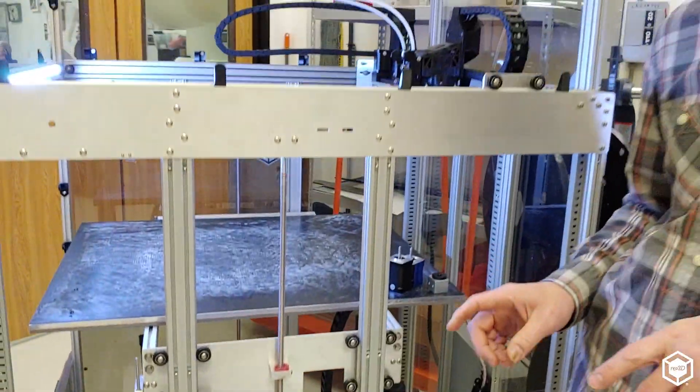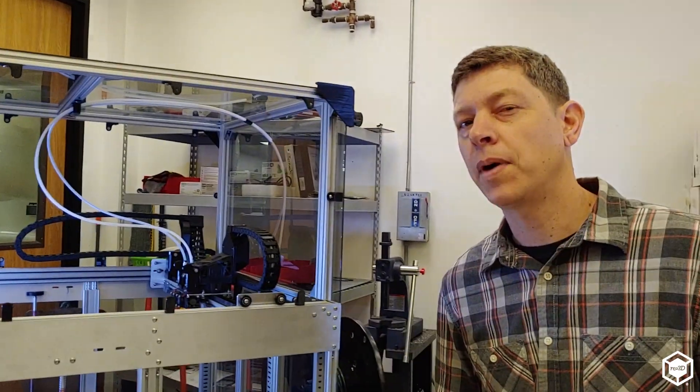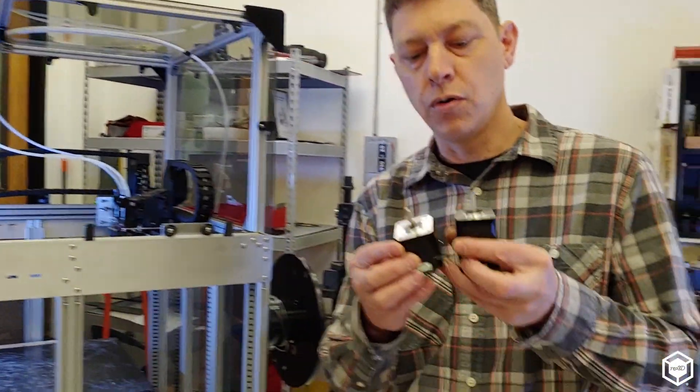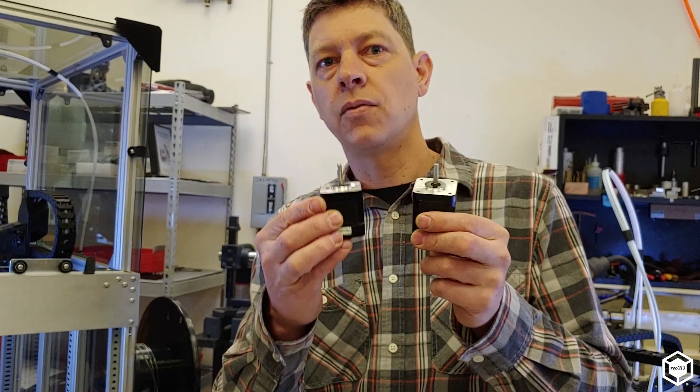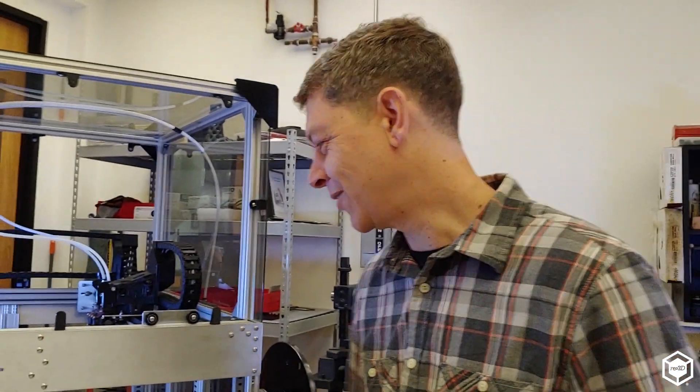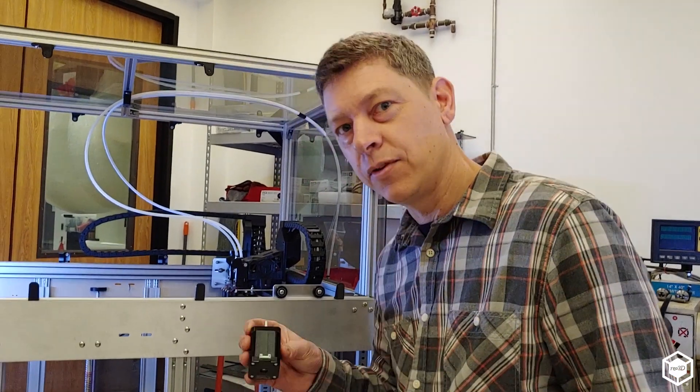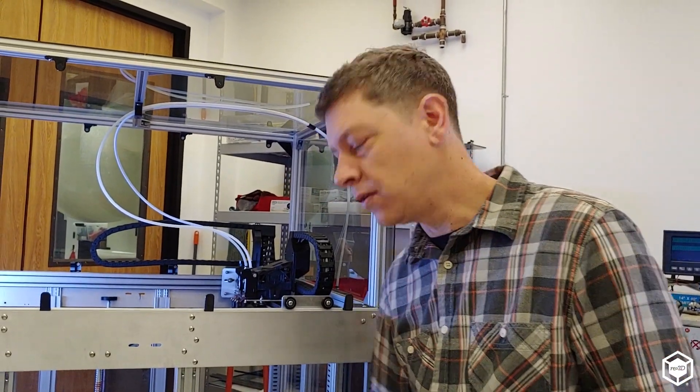In addition to that, we made the Z-axis even more powerful. So by adding a larger motor on each side, we're adding about 30% more power to that bed. It can actually lift about 150 pounds. I tested it with myself even. So don't try that at home. But we're absolutely upgrading the Z-axis on your bed.